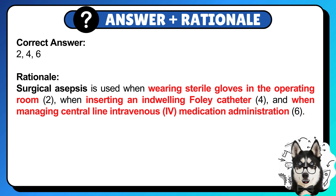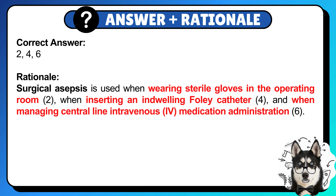Correct answer: 2, 4, and 6. Surgical asepsis is used when wearing sterile gloves in the operating room, when inserting an indwelling Foley catheter, and when managing central line IV medication administration.